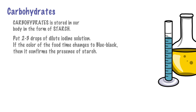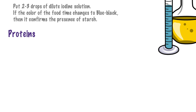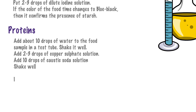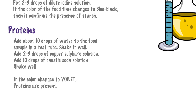Now let's see how we test for proteins. Take a small amount of food. In case you have some solid food, first grind it to change its form into powder. In the test tube, add this powdered food item, then add about 10 drops of water. After shaking the test tube well, add 2 to 3 drops of the copper sulfate solution that has already been prepared. Thereafter, add about 10 drops of caustic soda. Now wait for a few minutes. If the color of the test tube turns violet, it means that we have protein in the food item.